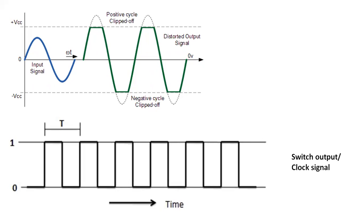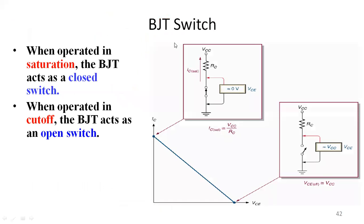Using this switching property we can operate the transistor as a switch, and we can form different logic switches or logic gates. This is how a transistor is used to configure a particular switch.